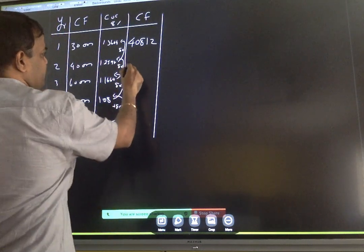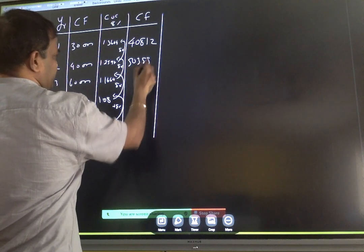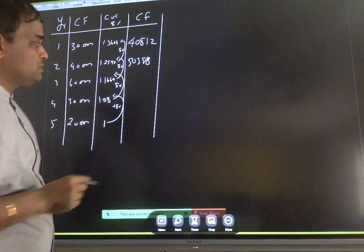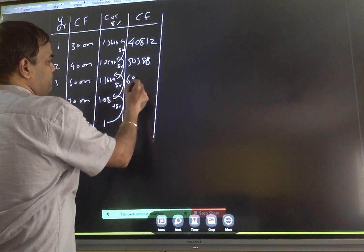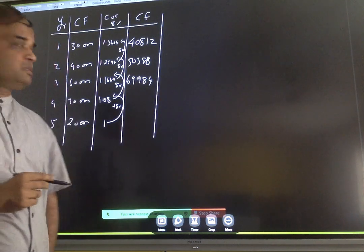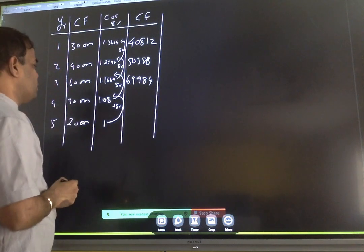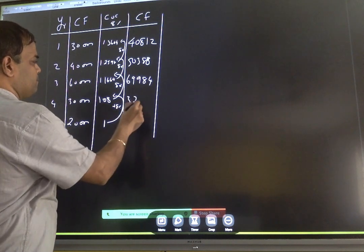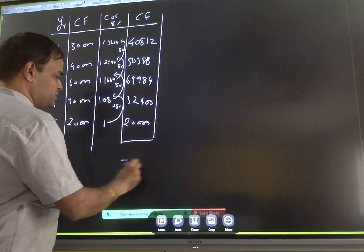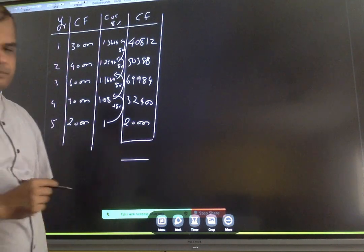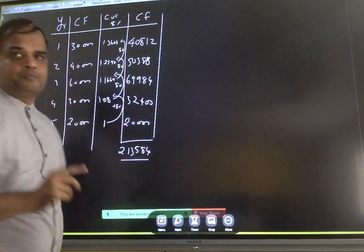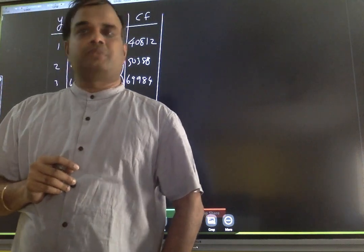1.2597 into 40,000 gives 50,388. Similarly the next one: 60,000 compounded gives 69,984. Then 30,000 into 1.08 gives 32,400. And year 5's 20,000 stays as 20,000. Total terminal value comes to how much now? 2,13,584. What have you got? 2,13,584. Okay.